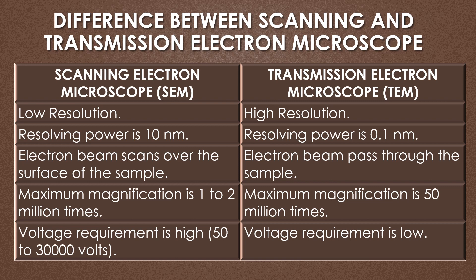The resolution of the scanning electron microscope is low, while the resolution of the transmission electron microscope is high. The resolving power of the SEM is 10 nanometers and the resolving power of the TEM is 0.1 nanometers. In the SEM the electron beam scans over the surface of the sample, but in the TEM the electron beam passes through the sample and shows the internal structure.